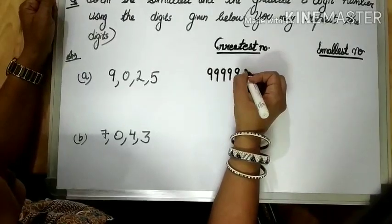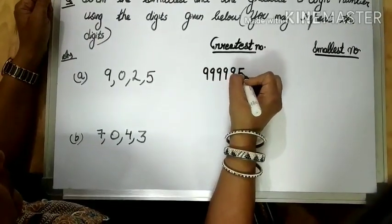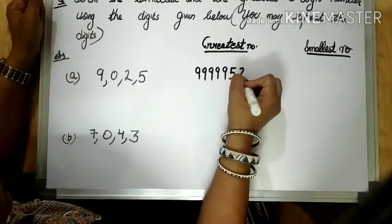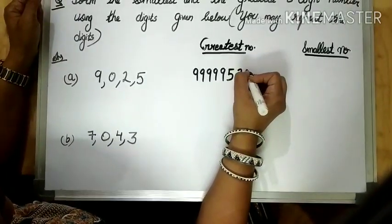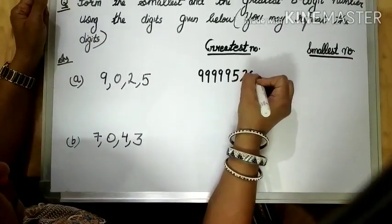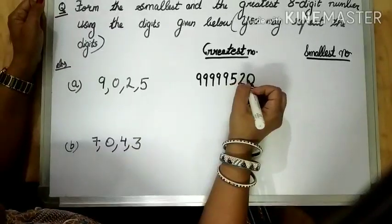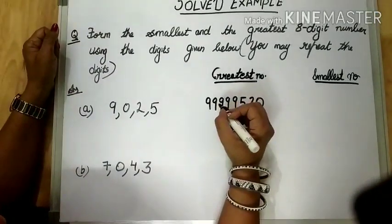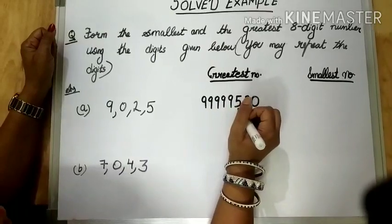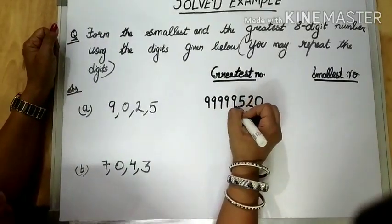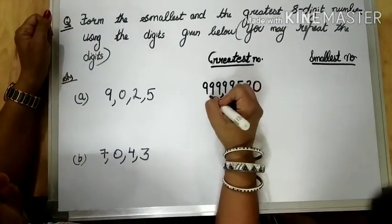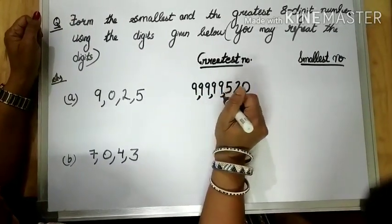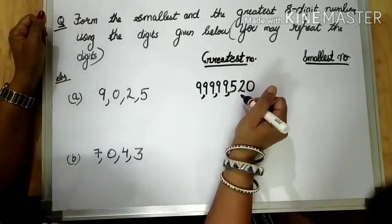Now, which is the next highest digit? That is 5. Which is the next highest? That is 2. And which is the next highest? That is 0. So that forms 8 digits — 1, 2, 3, 4, 5, 6, 7, 8. Does it form the 8-digit number? Now, insert the commas. So the number formed is 9 crore 99,99,520.